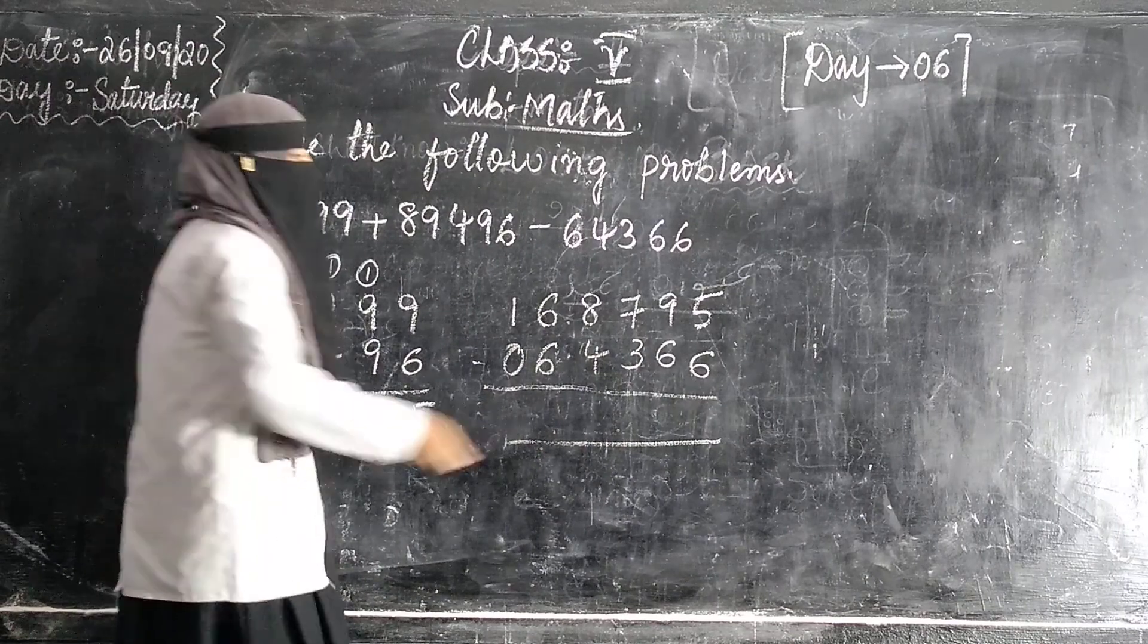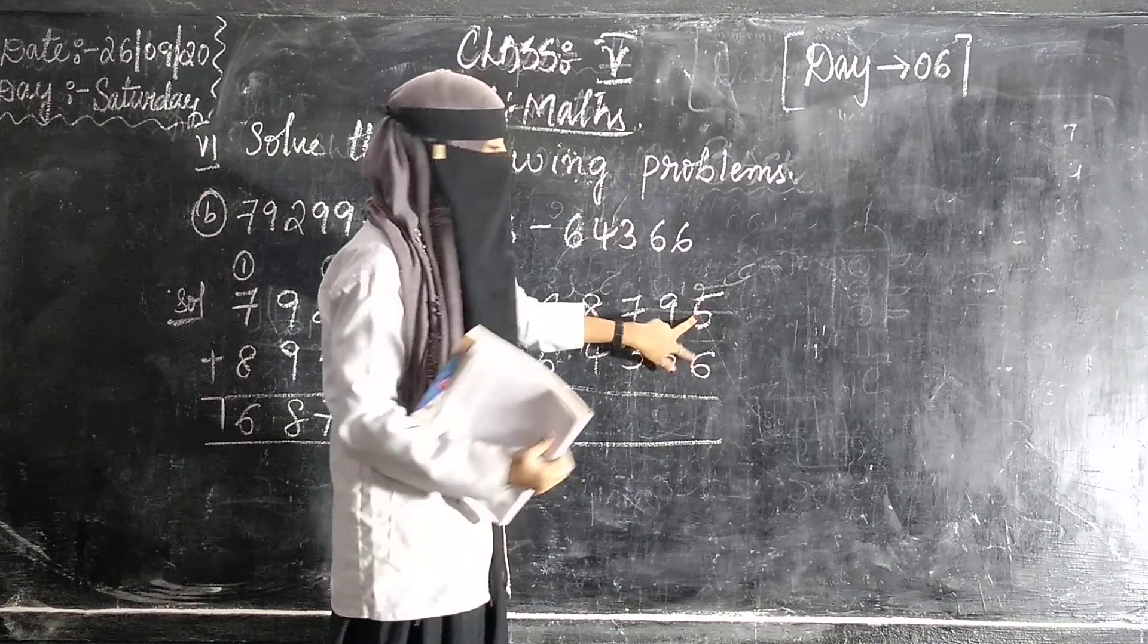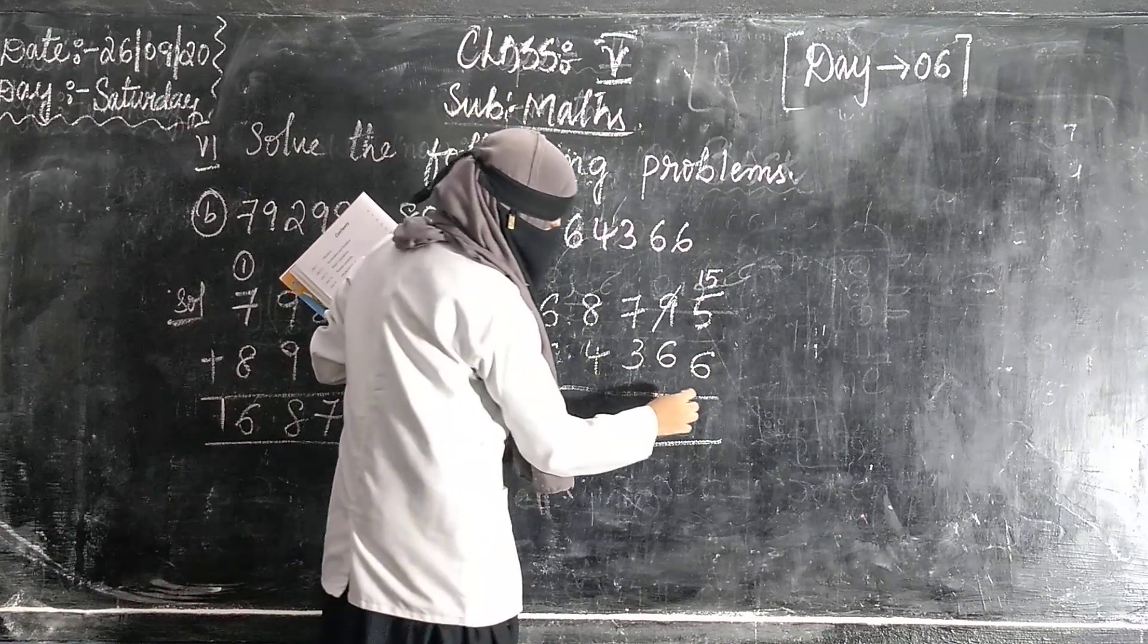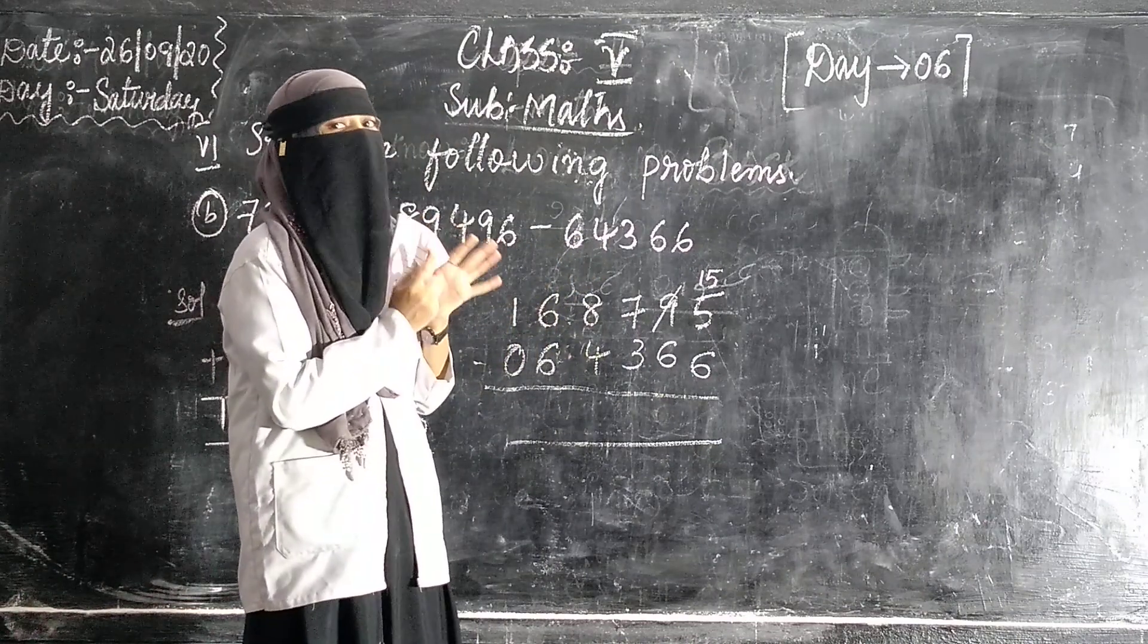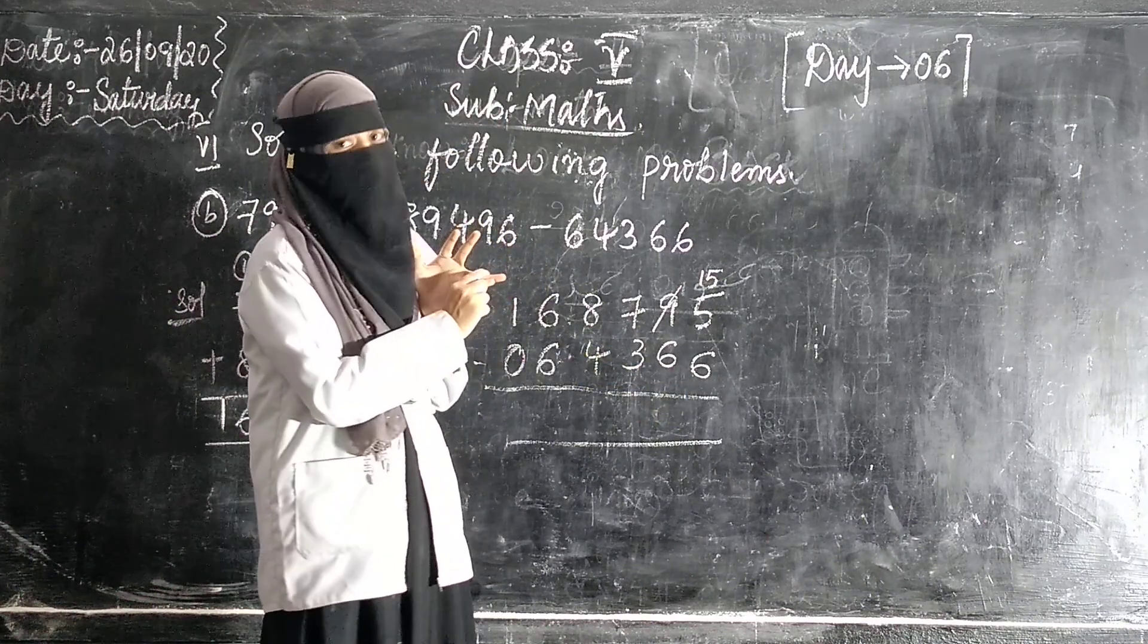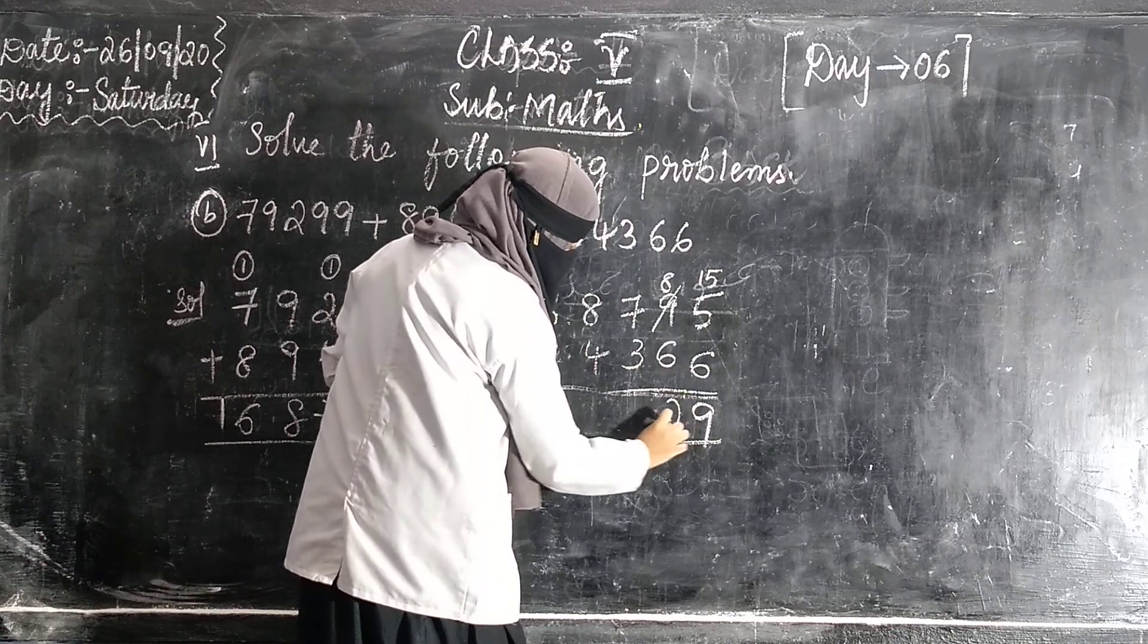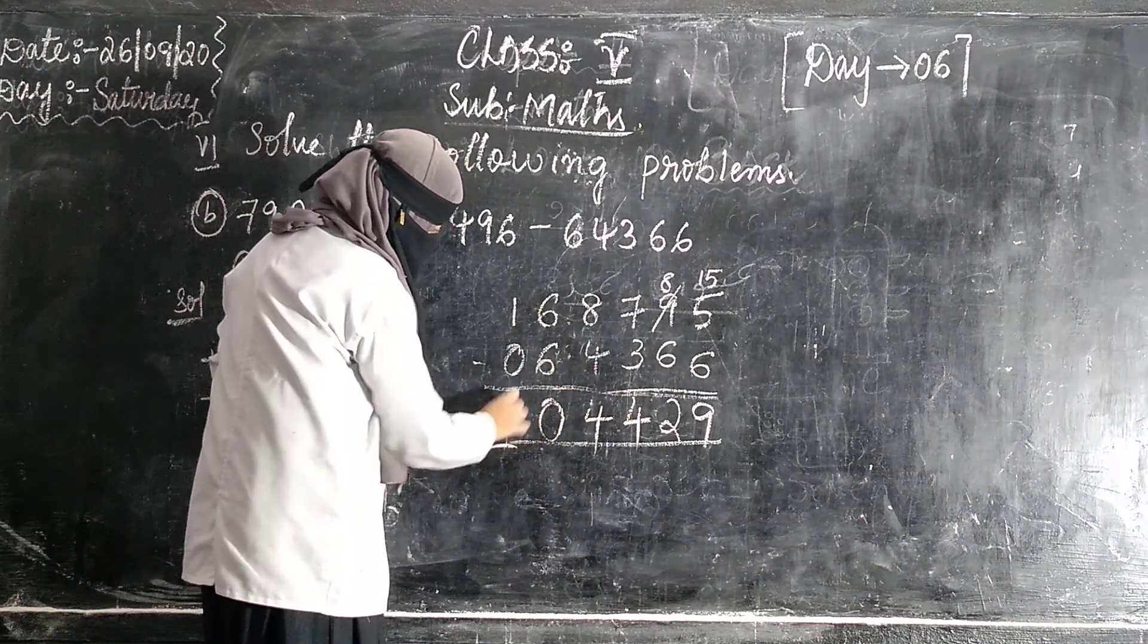Now we will subtract. 5 minus 6. Is it possible to subtract children? No, because 5 is small, 6 is big number. So I am taking borrow. 15 minus 6, 9. 8 minus 6, 2. 7 minus 3, 4. 8 minus 4, 4. 6 minus 0, 6. 1 minus 0, 1. Writing your classwork.